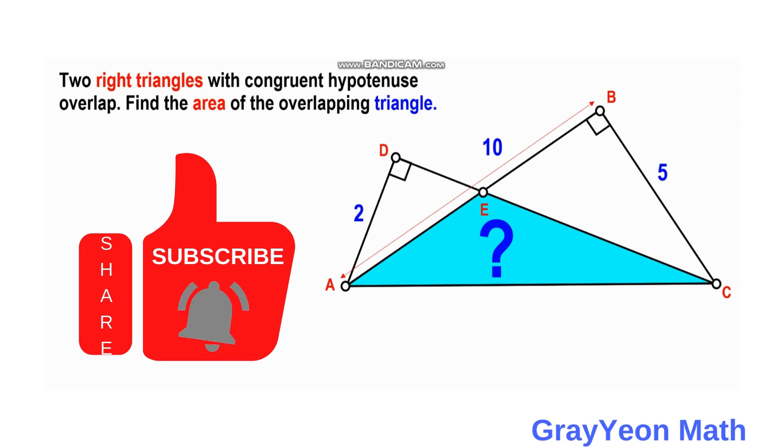Welcome to GrayeonMath, where it asks us this problem. We have two right triangles that overlap and their hypotenuses are congruent. The hypotenuse is AC.